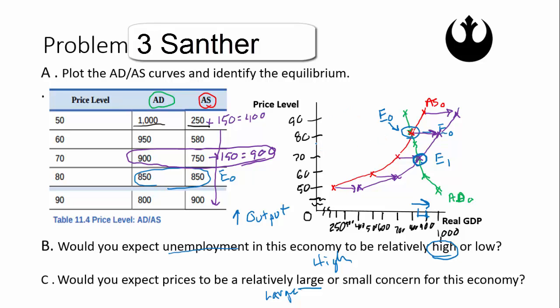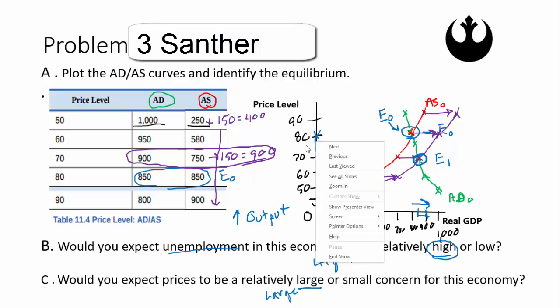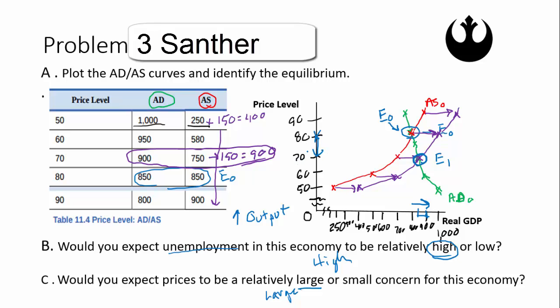Looking at the price level: it begins at 80 and drops to 70 at the new equilibrium — so price level decreases. As for employment, it follows output. Since output increases, employment will increase as well. That covers the final question of how the shift in aggregate supply affects output, price level, and employment for the Santher economy.